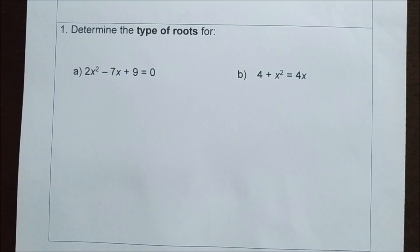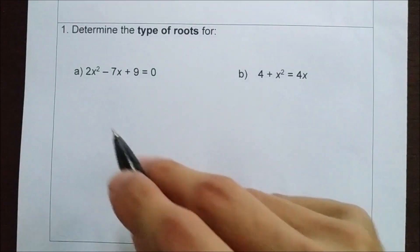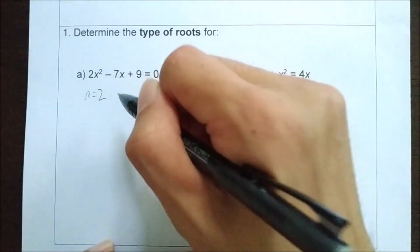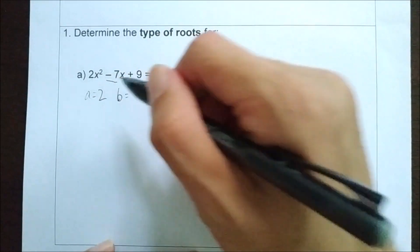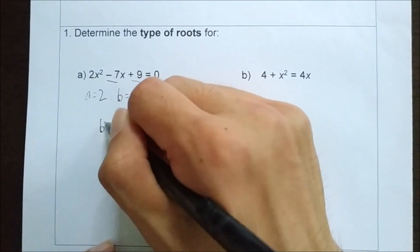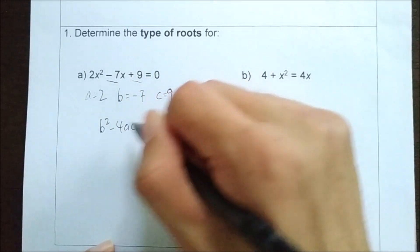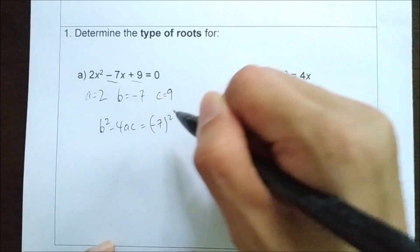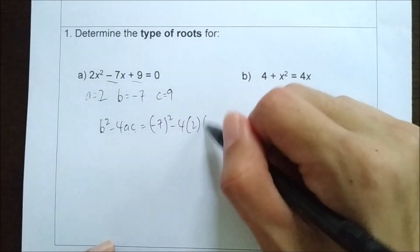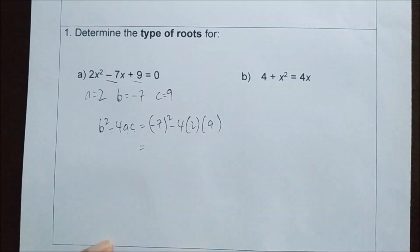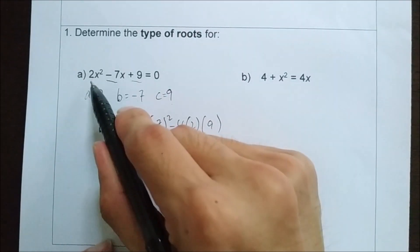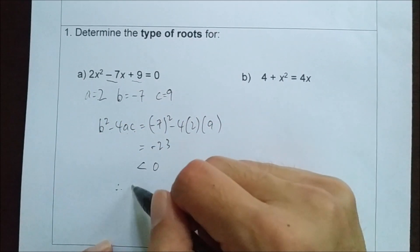Let us see how we can use the discriminant to determine the type of roots for these two equations. First, we identify the value of a, which is 2, the value of b, which is negative 7, the value of c, which is positive 9. Then we substitute into b squared minus 4ac: negative 7 squared minus 4 times 2 times 9. We calculate and get the answer negative 23, which is less than 0. So we know this quadratic equation has no roots.